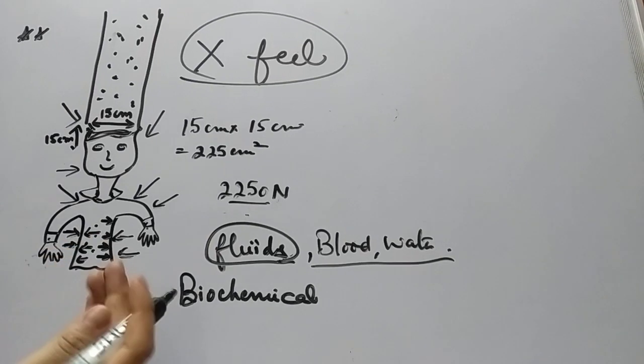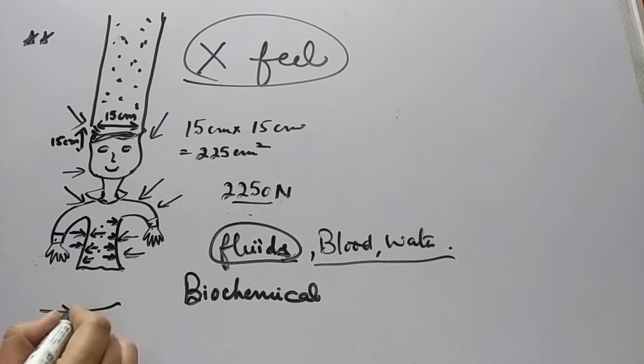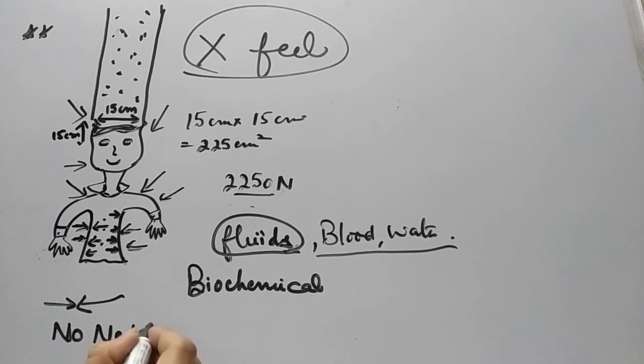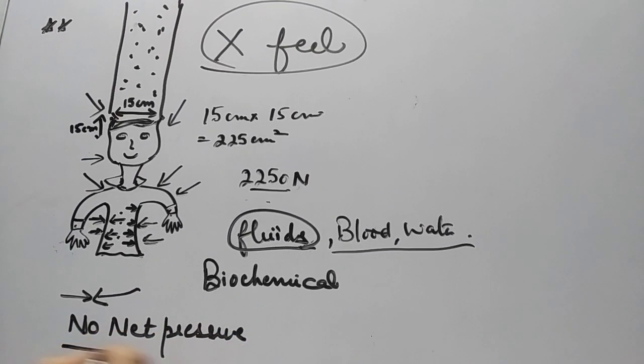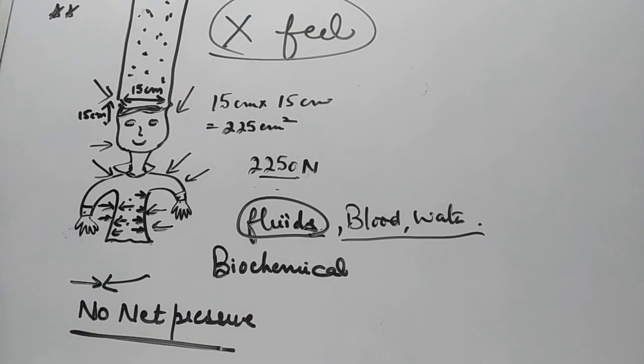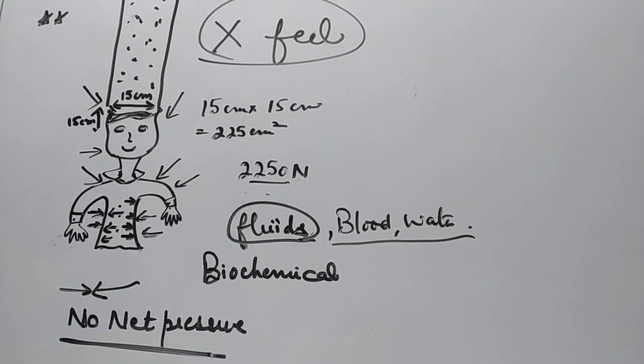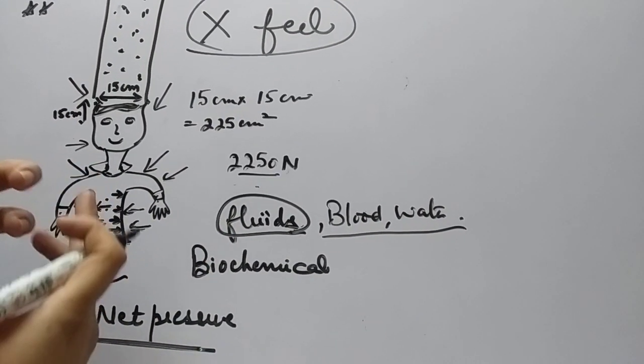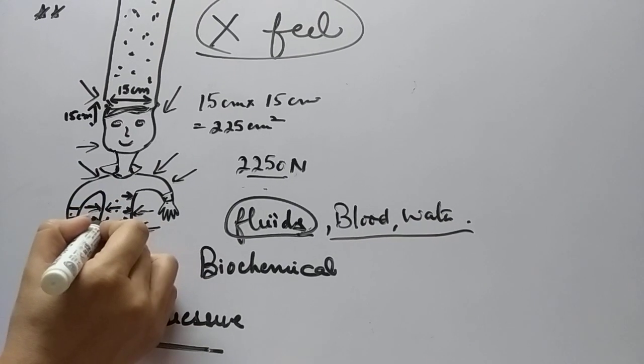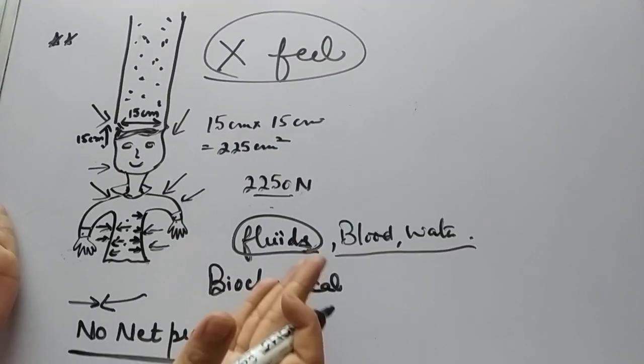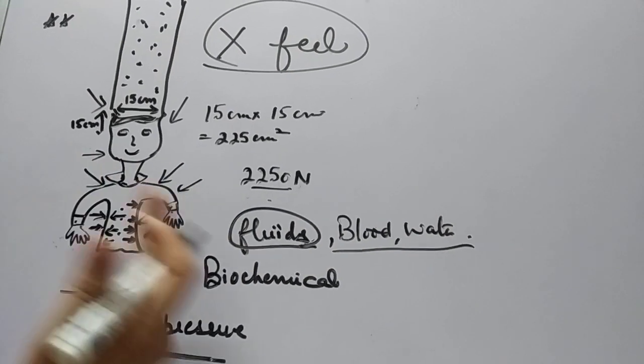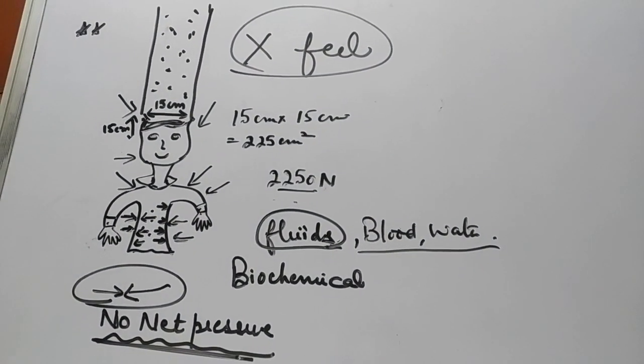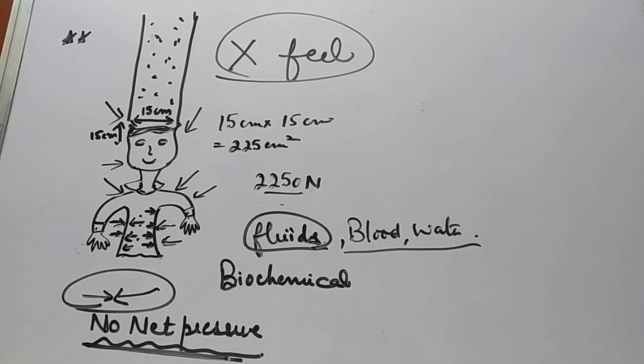Whereas the air pressure is exerted inwards. That is the reason that both the pressures are getting balanced with each other and we do not feel any net pressure over our body. Even if a lot of air is present everywhere exerting pressure, we are not getting crushed because of the presence of various fluids inside which are exerting pressure outwards. Air is exerting pressure inwards. Both pressures are getting balanced and there is no net pressure.